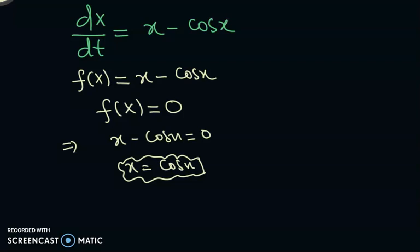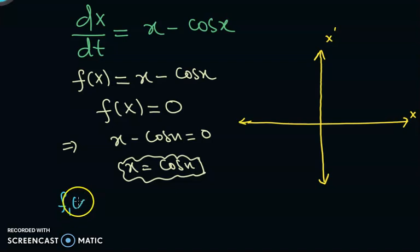So let's see how we can. Let's have x, x prime plane. This is x, this is x prime plane. So let's plot f of x equal to f1 of x equal to cos x. So the graph of f of x equal to cos x looks something like this.